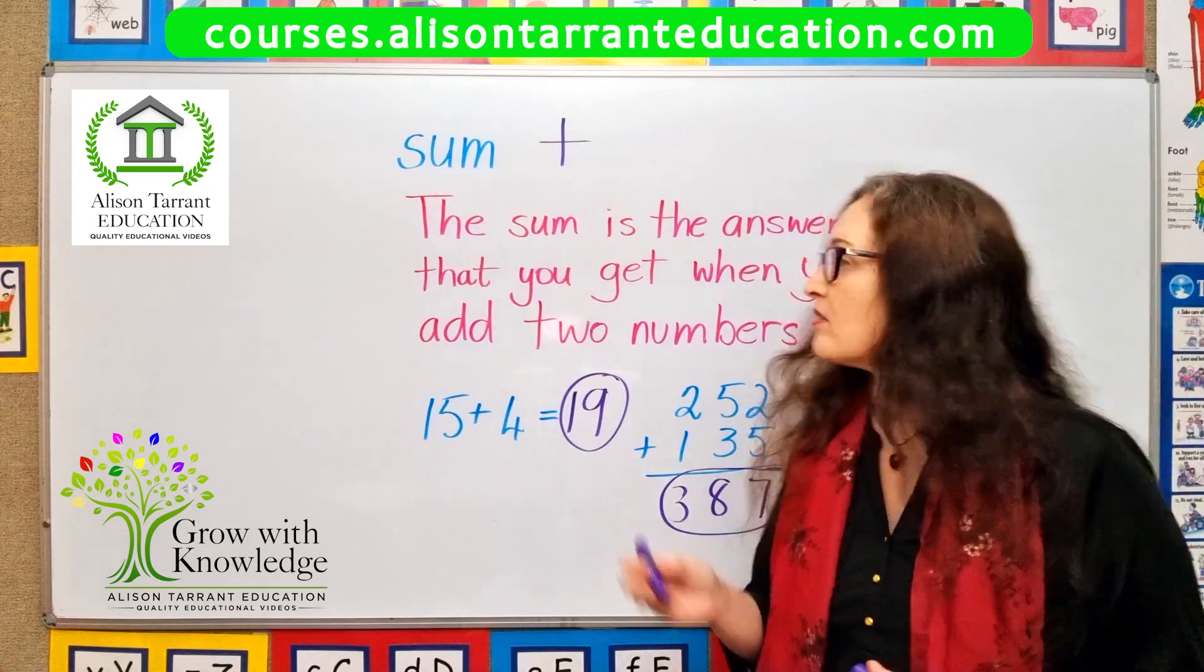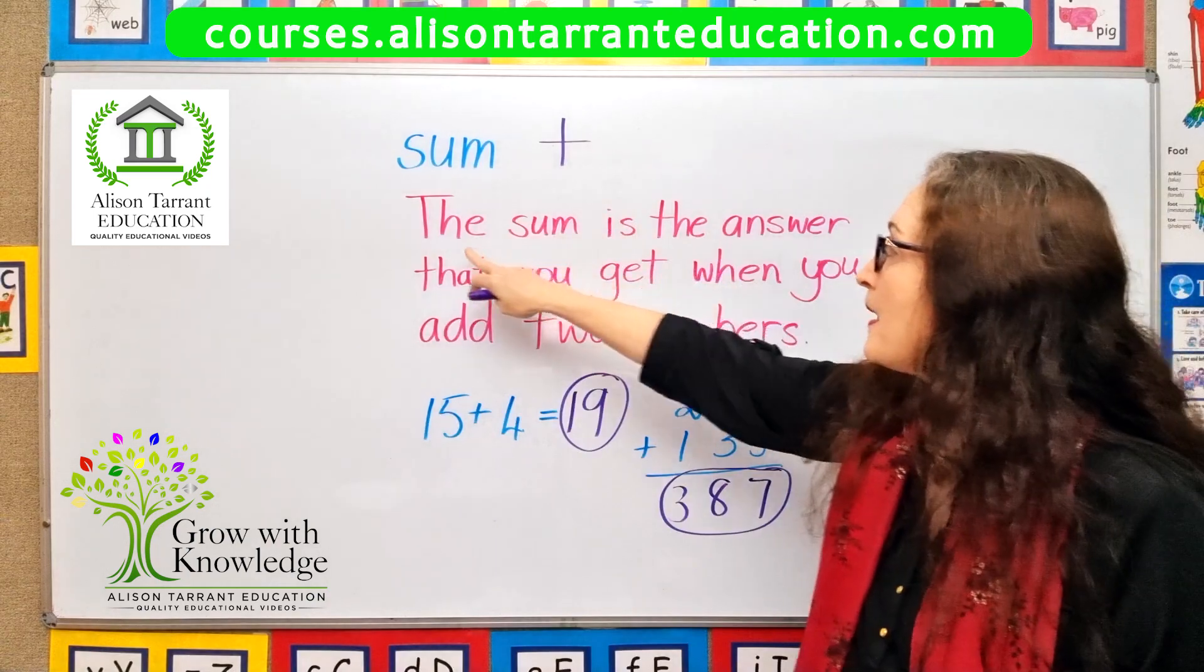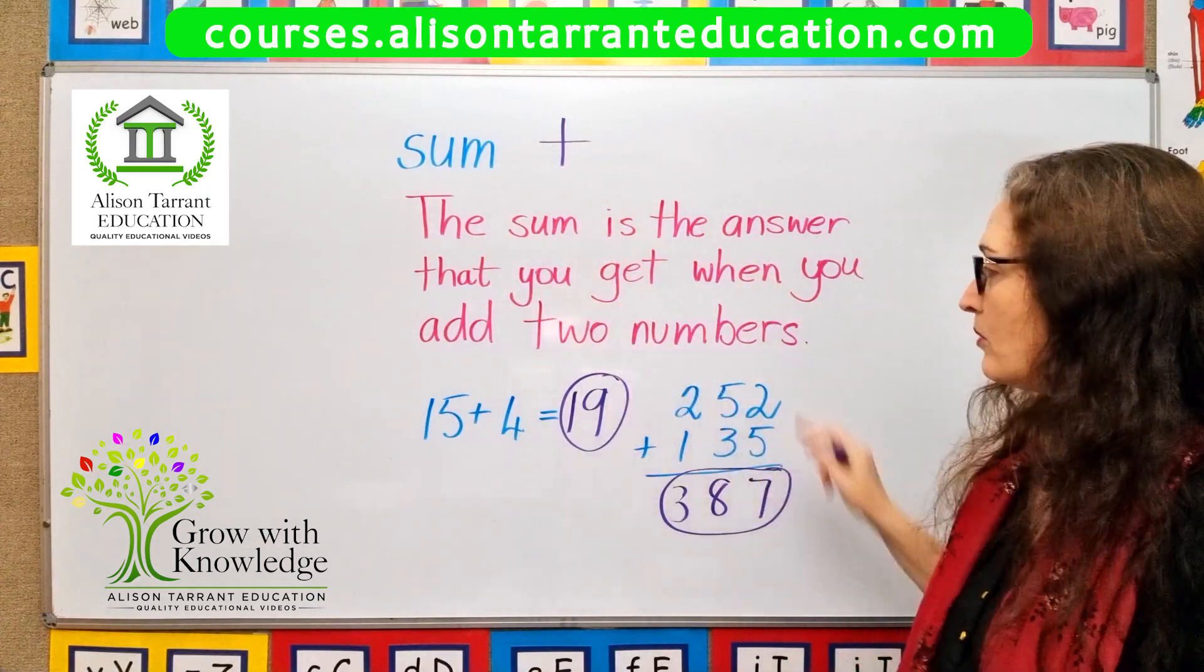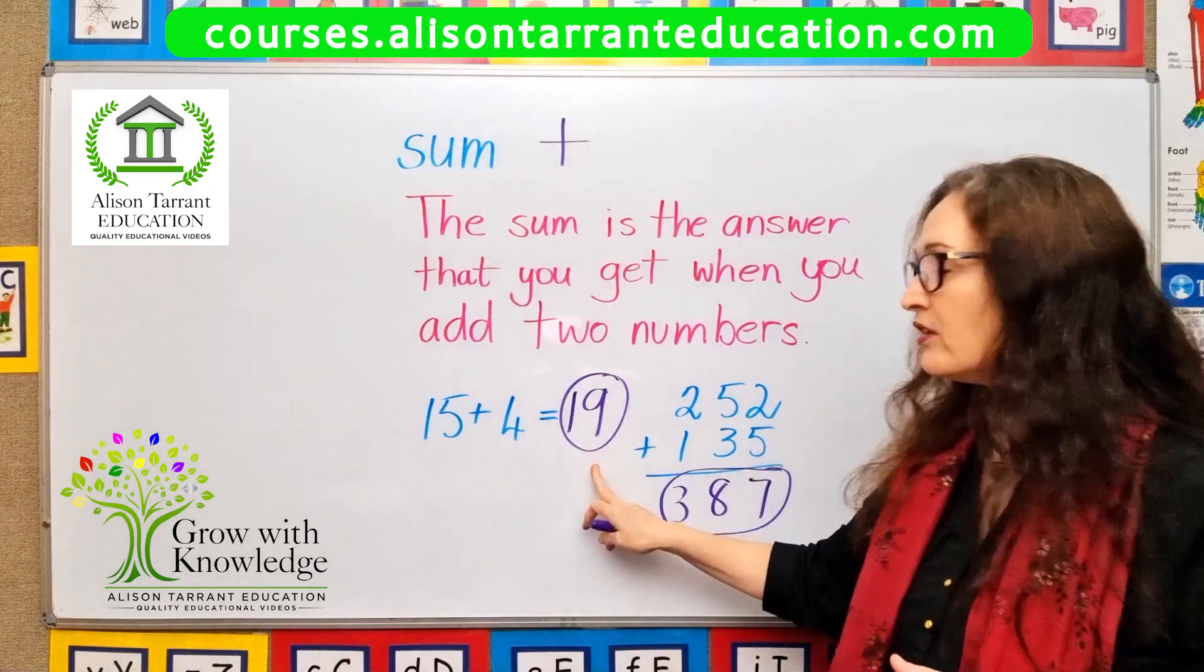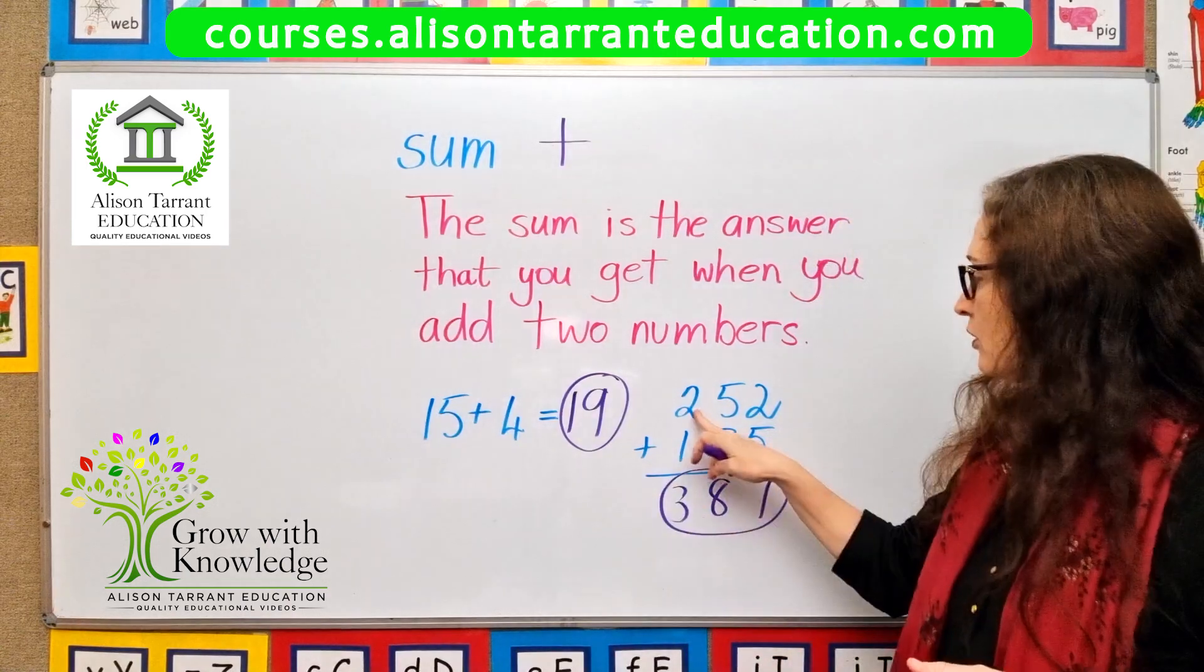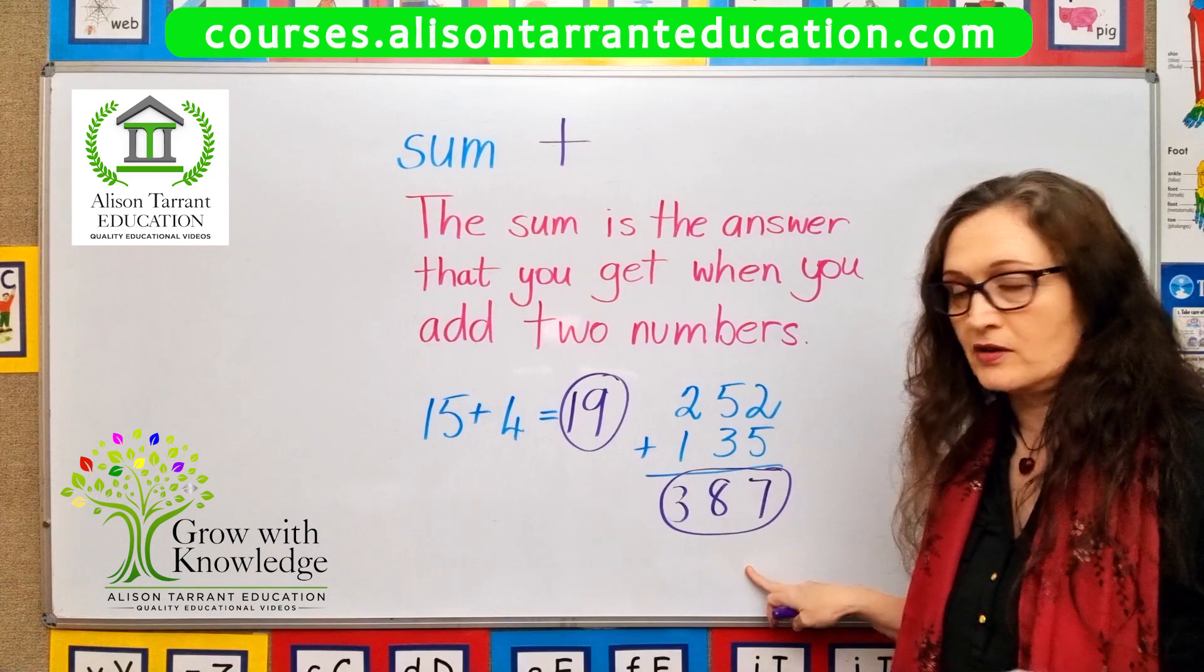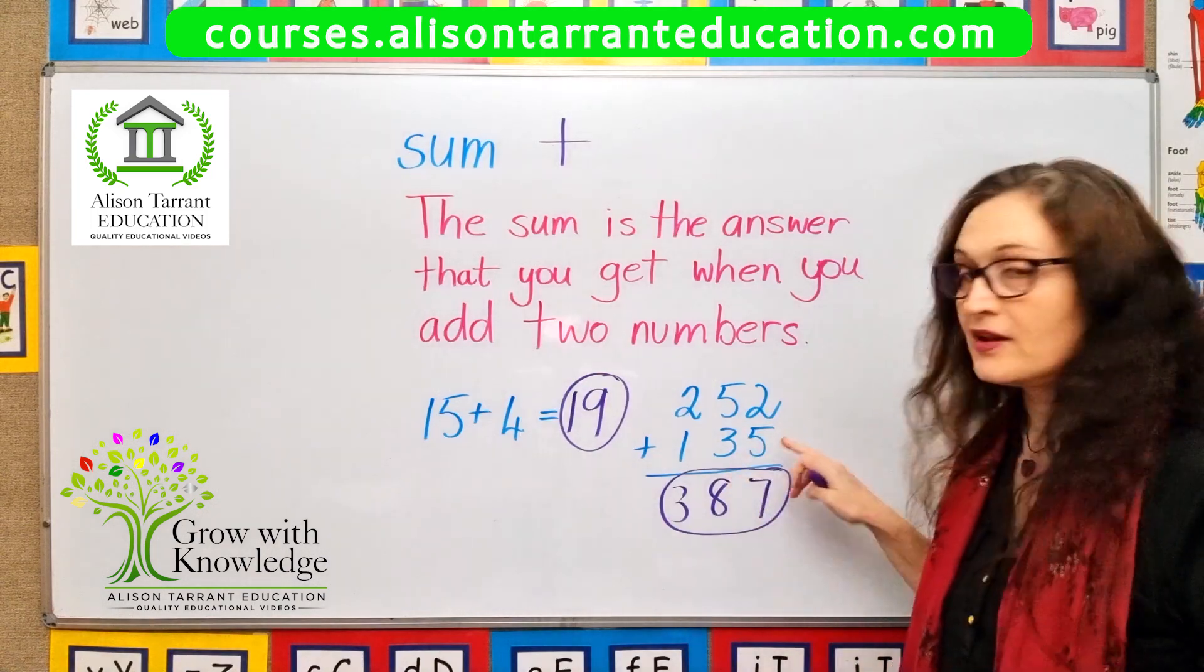So we'll just revise this. Sum is to do with plus or addition. The sum is the answer that you get when you add two numbers. 15 plus 4 equals 19. 19 is the sum of 15 plus 4. 252 plus 135 is 387. 387 is the sum when you add these two numbers.